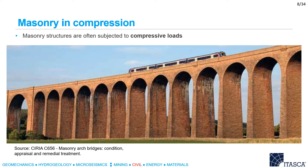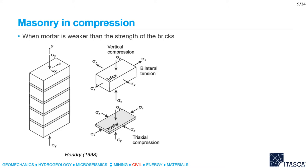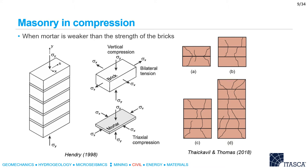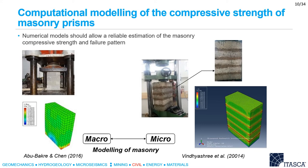The first example relates to discrete element modeling of masonry in compression. Masonry structures are often subjected to compressive loads. For example, the picture in this slide shows an over 100-year-old brick masonry viaduct located in the UK. Over the last years, masonry arched bridges and viaducts were subjected to higher and more frequent cyclic loads, resulting in premature cracking and deterioration. Therefore, it is vital to understand their in-service and load carrying capacity. When mortar is weaker than the bricks, the bricks are subjected to biaxial tension and the mortar to triaxial compression, and the failure mechanism is characterized by vertical cracking. In order to accurately model the compressive strength of masonry, the numerical model should allow a reliable estimation of the compressive strength and failure pattern.